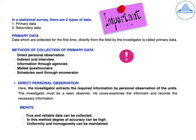In any statistical survey, there are two types of data: primary data and secondary data. Data which are collected for the first time directly from the field by the investigator is called primary data. Methods of collection of primary data include: direct personal observation, indirect oral interview, information through agencies, mailed questionnaire, and schedules sent through enumerators.